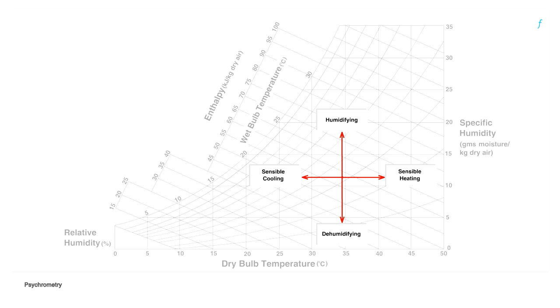Moving perpendicular to the wet bulb temperature lines would cause a combination of cooling and dehumidification or heating and humidification. Moving along the wet bulb temperature line downwards would be heating and dehumidification whereas upwards would be cooling and humidification which is what happens during evaporative cooling.